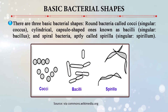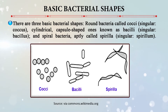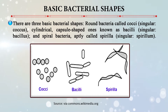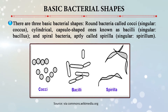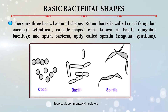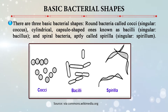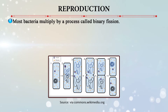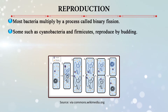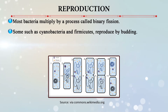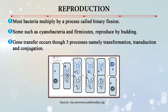Basic bacterial shapes include three types: round bacteria referred to as cocci (singular: coccus), cylindrical or rod-shaped bacteria known as bacilli (singular: bacillus), and spiral bacteria called spirilla (singular: spirillum). Regarding reproduction, most bacteria multiply by a process called binary fission. Some, such as cyanobacteria and Firmicutes, can reproduce by budding. Gene transfer can also occur through three processes: transformation, transduction, and conjugation.